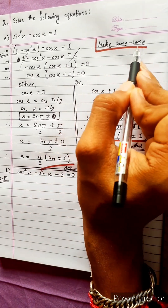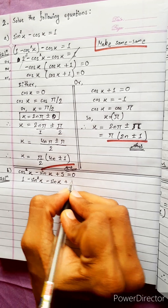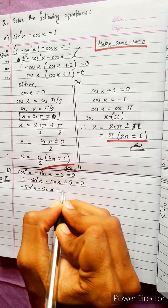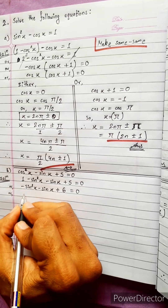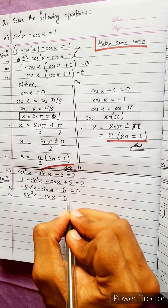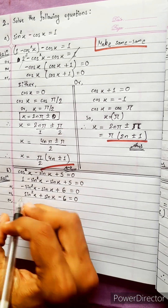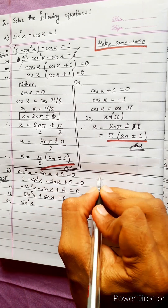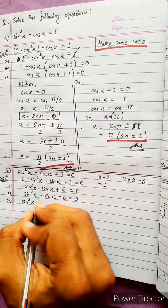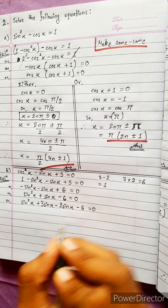Now cos²x is rewritten using sin. We get: 1 minus sin²x minus sin x plus 5 equals 0, giving minus sin²x minus sin x plus 6 equals 0. Taking minus as a common factor: sin²x plus sin x minus 6 equals 0. Using factors where 3 times 2 equals 6 and 3 minus 2 equals 1.